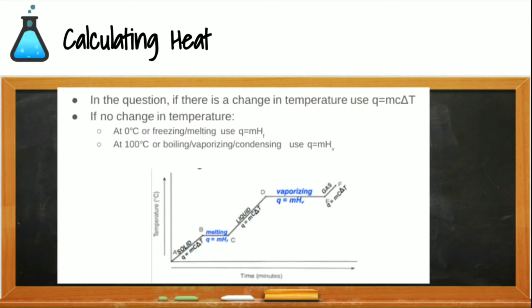When we look at reference table T, we can see that there are three heat equations provided. One of the heat equations we will use when there's a change in temperature. So when we look at the phase change diagram, we can see we would use Q equals MC delta T, where there's a change in temperature, on any of the sloped portions of the graph.